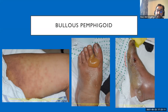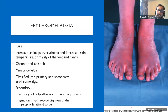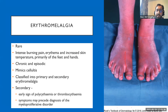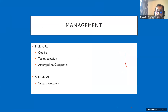Erythromelalgia is a rare condition. Its triad is intense burning pain, erythema, and increased skin temperature, primarily affecting the feet and hands in a chronic, episodic pattern. If suspected, exclude blood disorders such as myeloproliferative disorders, polycythemia, and thrombocytopenia. Management is mainly symptomatic and pain-focused — refer to dermatology.